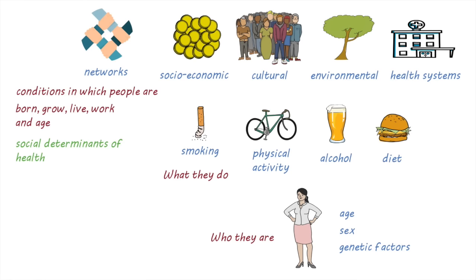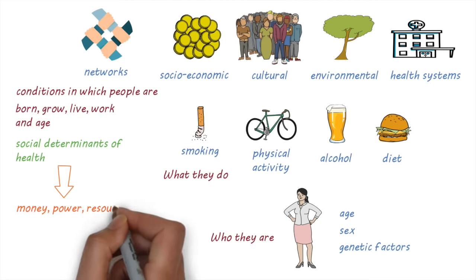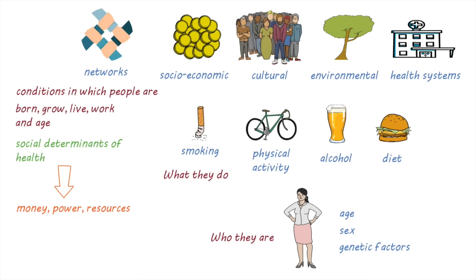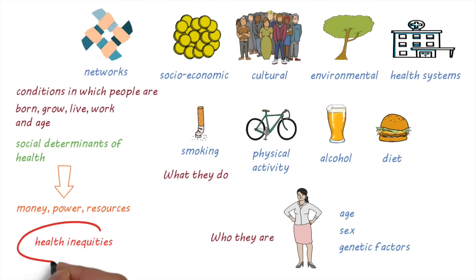The social determinants of health are ultimately shaped by the distribution of money, power, and resources at an international, national, and local level. They have a marked influence on health inequities, which are the unfair and avoidable health differences between different groups of people within countries or between countries.